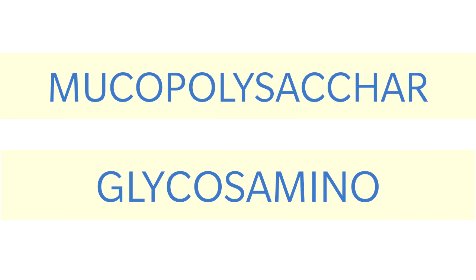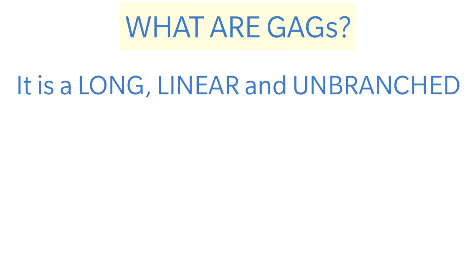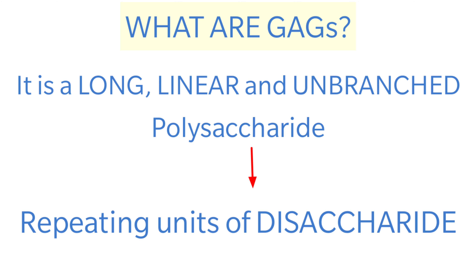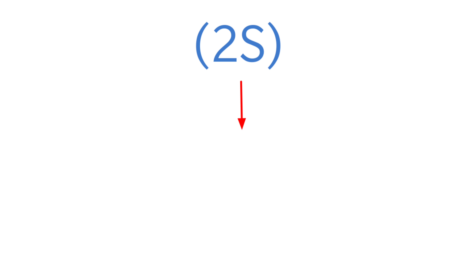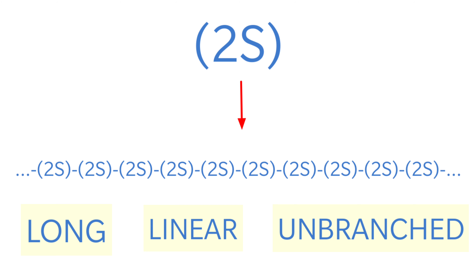Let us start with the most important topic of carbohydrates from the point of view of exams — mucopolysaccharides or GAGs. A mucopolysaccharide is a long, linear, and unbranched polysaccharide comprising a repeating unit of disaccharides. Consider a two-sugar unit — a disaccharide — repeated in a linear chain to form a long chain with no branches.